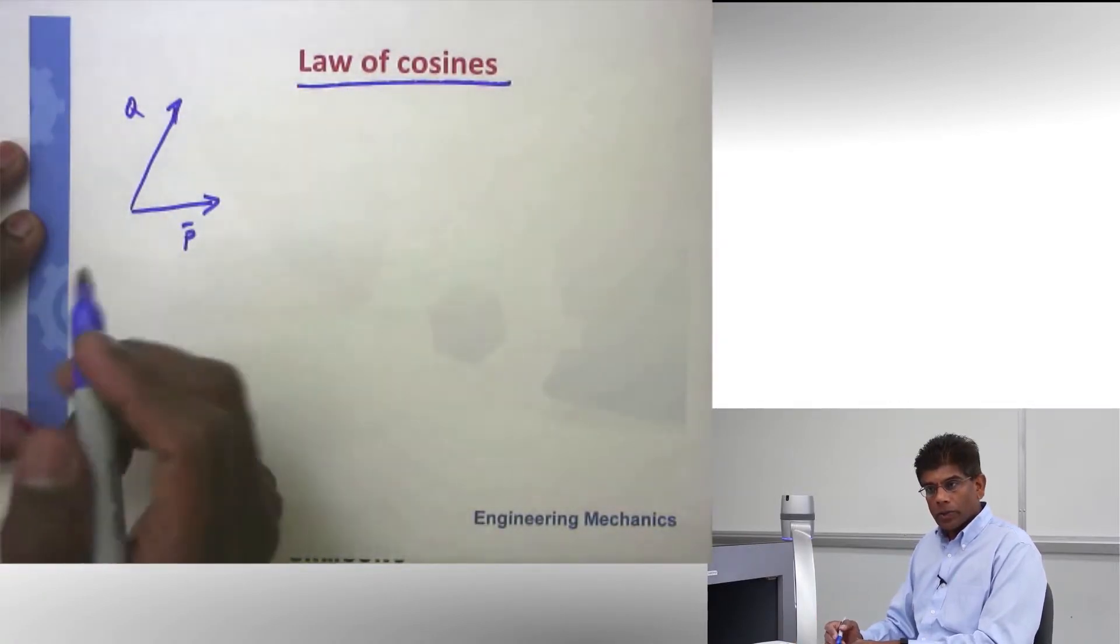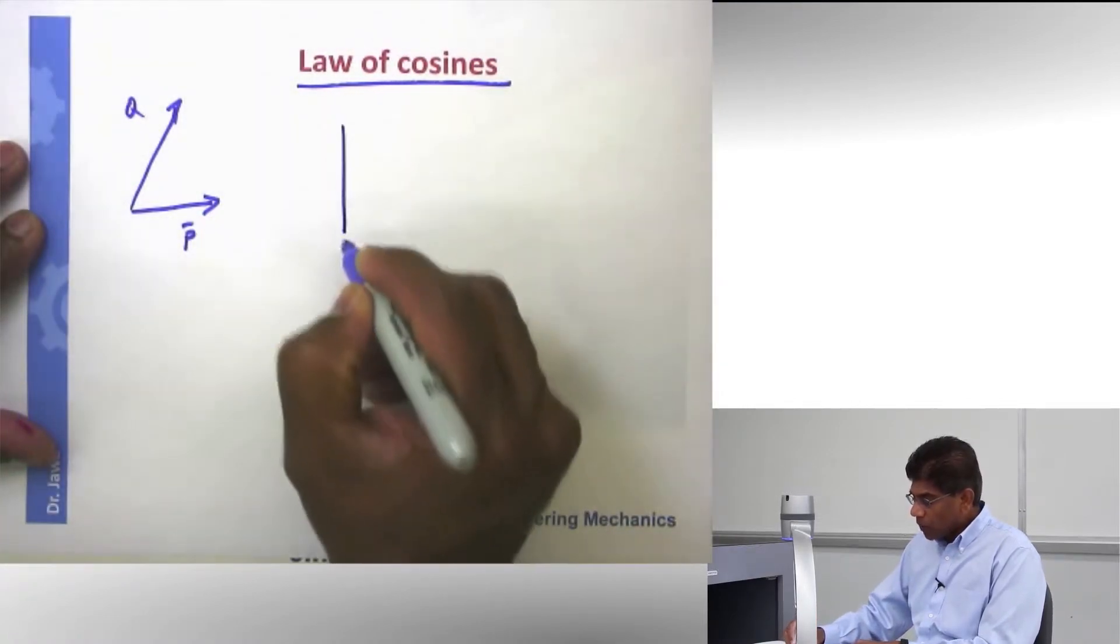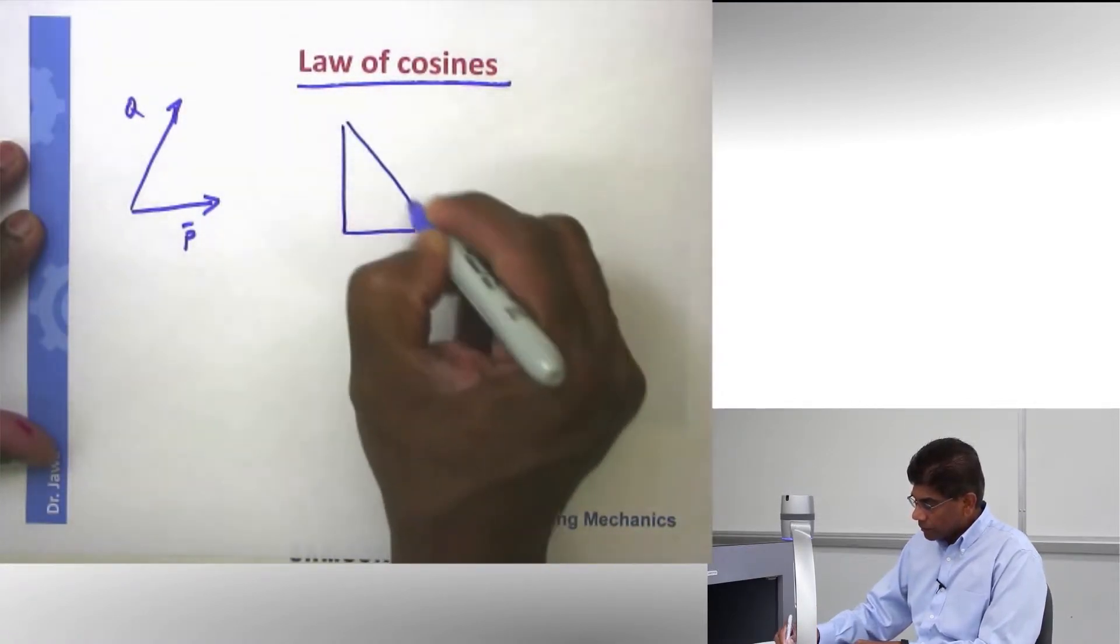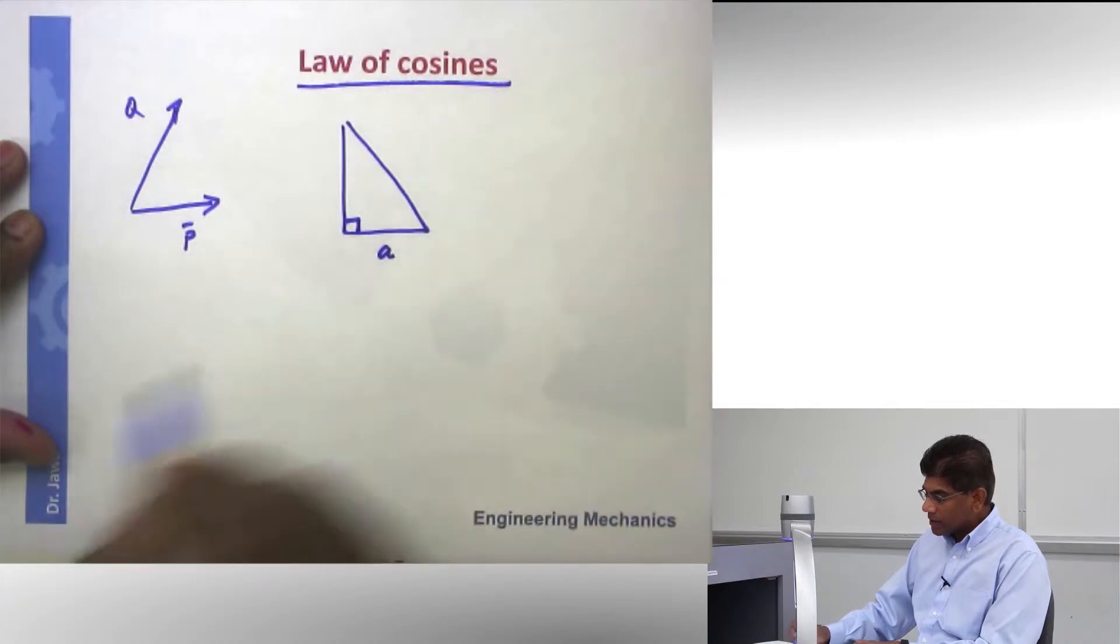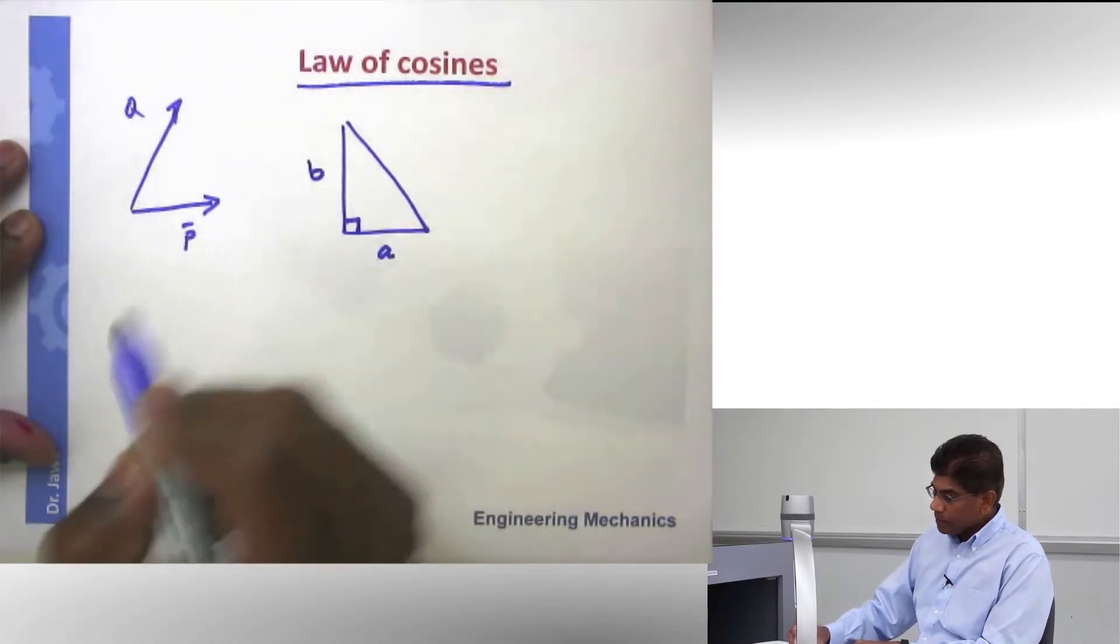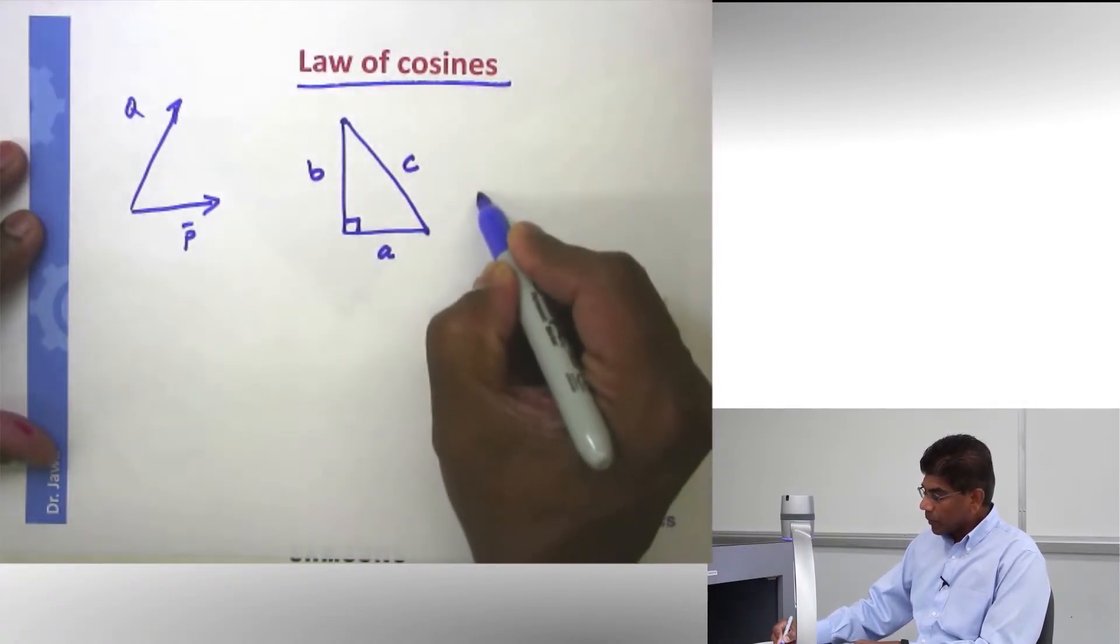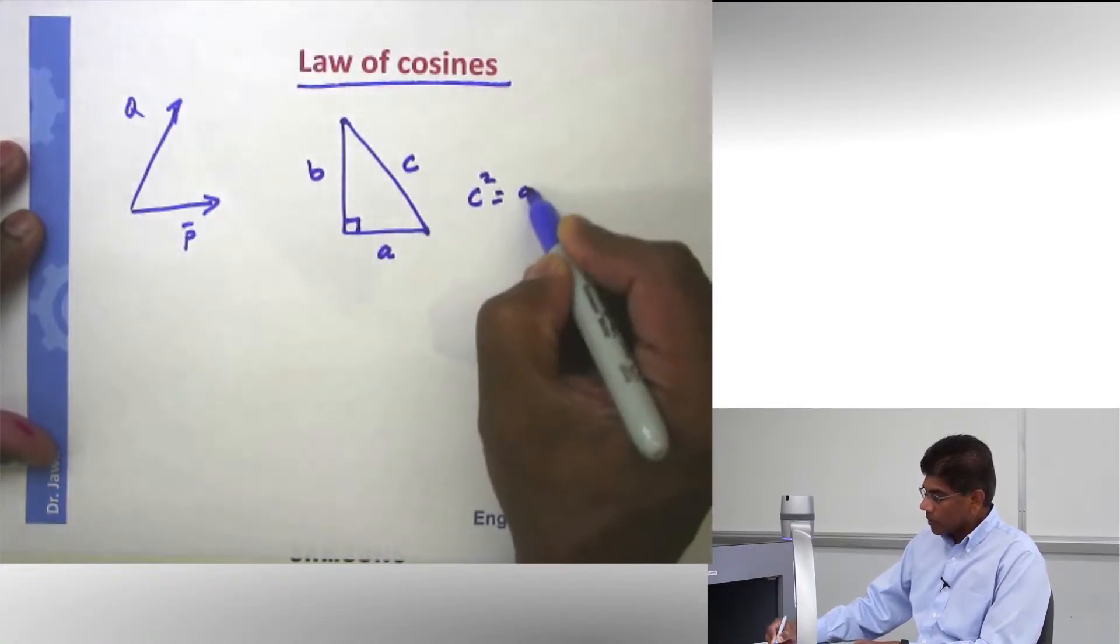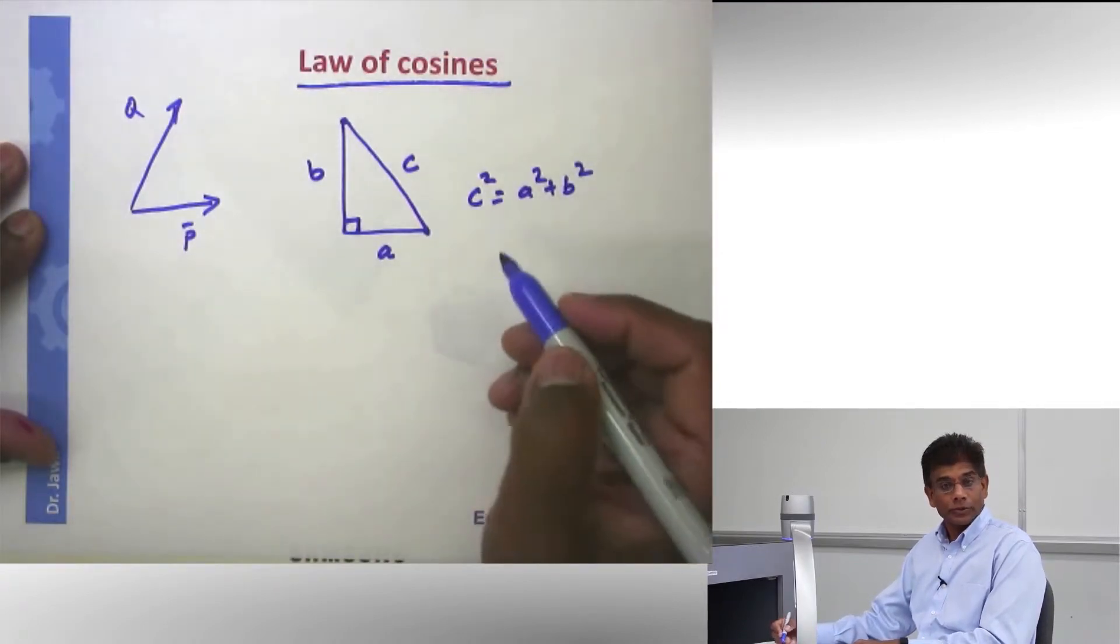I want to remind you about Pythagorean theorem. If you have a right triangle, which means one of the angles is 90 degrees, it has two legs. This is side A, this is side B, and this is side C, which is also known as hypotenuse. And this hypotenuse squared is equal to A squared plus B squared. You have learned this probably in middle school.